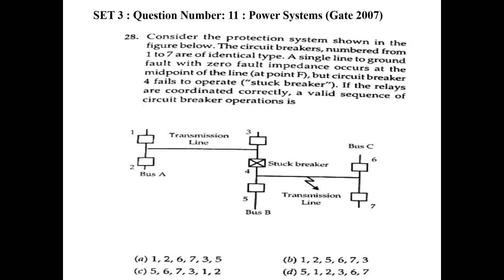First question: Consider the protection system shown in the figure below. The circuit breakers are numbered 1 to 7, identical in type. A single line to ground fault with zero fault impedance occurs at the midpoint of the line at point F, but circuit breaker 4 fails to operate. If the relays are coordinated correctly, what is the valid sequence of operation?